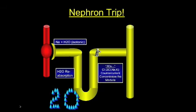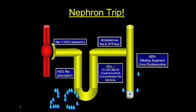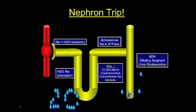The distal tubule is where aldosterone works to reabsorb sodium, water follows, and potassium is excreted. And finally, ADH works at the distal tubules and the collecting duct by increasing water permeability. It's the concentration gradient previously established that draws the water inside, so the water is reabsorbed.